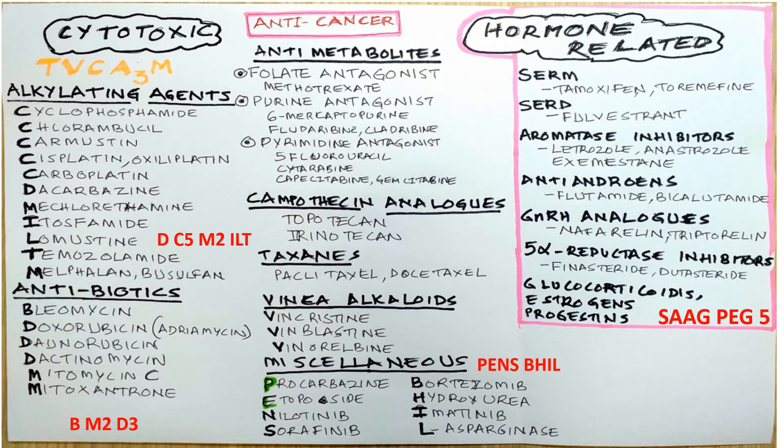Among the miscellaneous cytotoxic drugs we have about eight drugs: procarbazine, etoposide, nilotinib, sorafenib, bortezomib, hydroxyurea, imatinib, and L-asparaginase. Moving to the second big group — the hormone-related drugs.